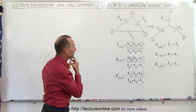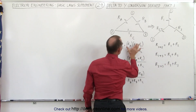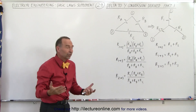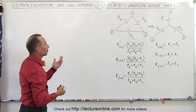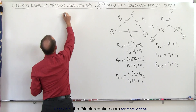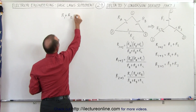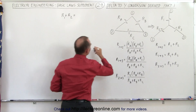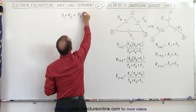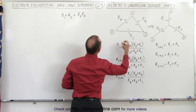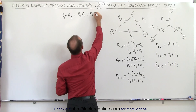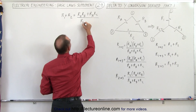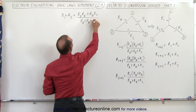For the delta-to-Y conversion to be correct, the resistance between each pair of nodes must be equal in both circuits. So R1 + R2 must equal the resistance from one to two in the delta circuit, which when expanded gives: (RA·RB + RA·RC) divided by (RA + RB + RC).